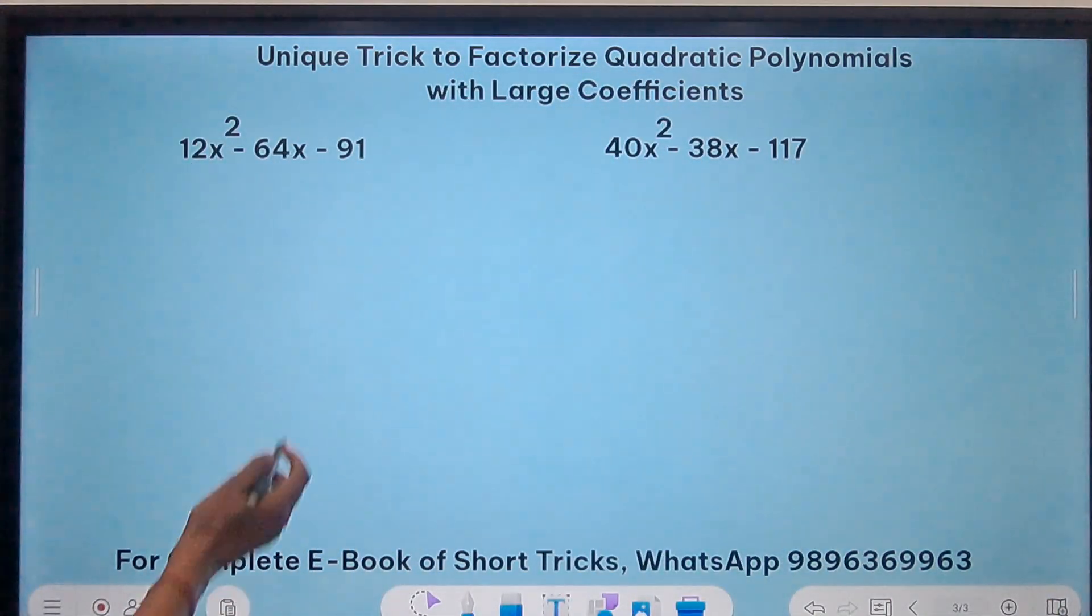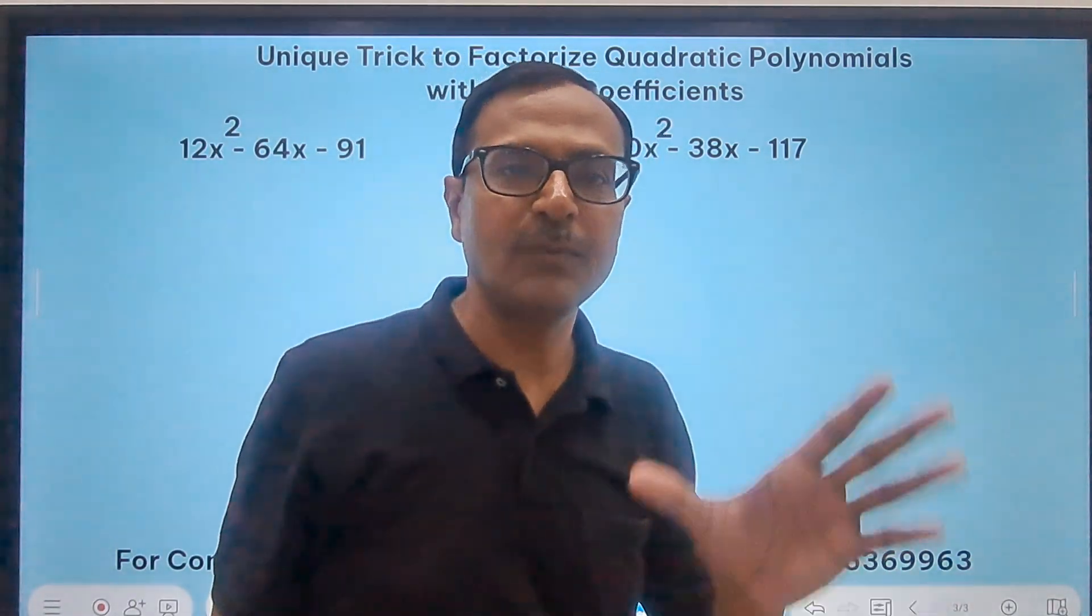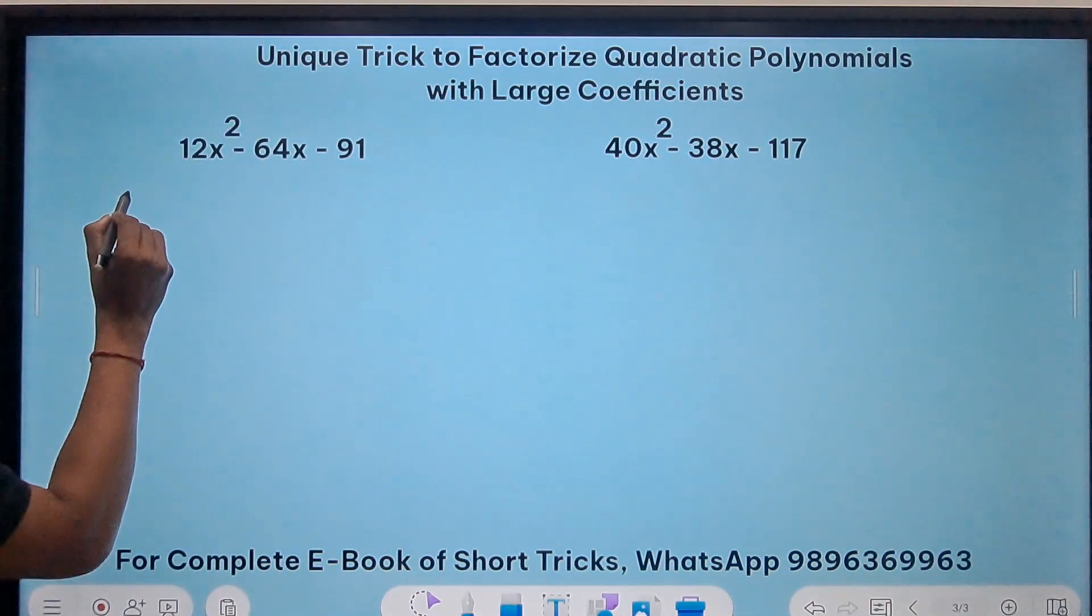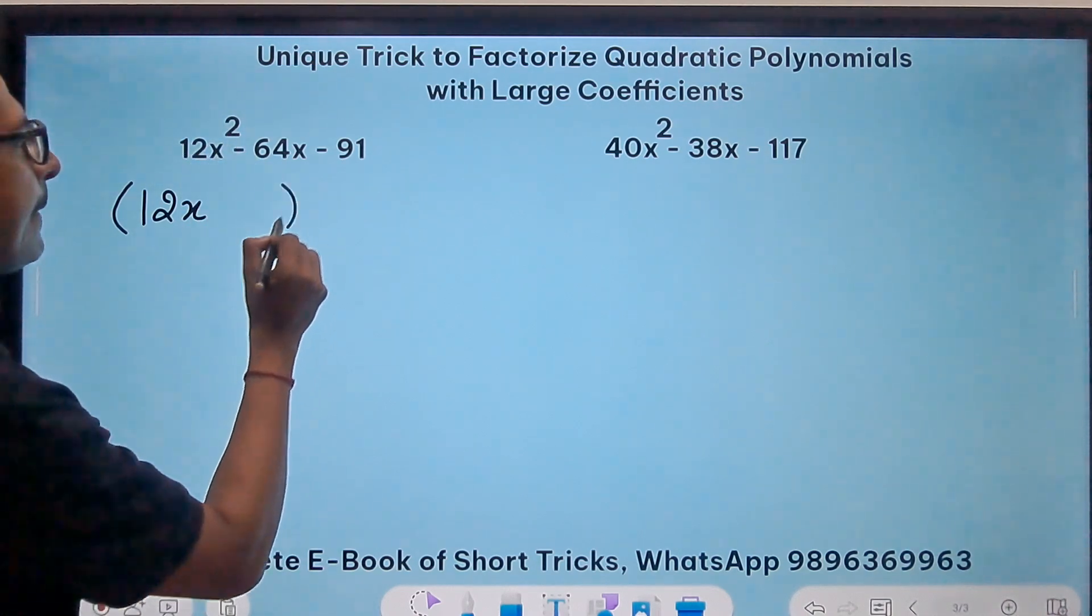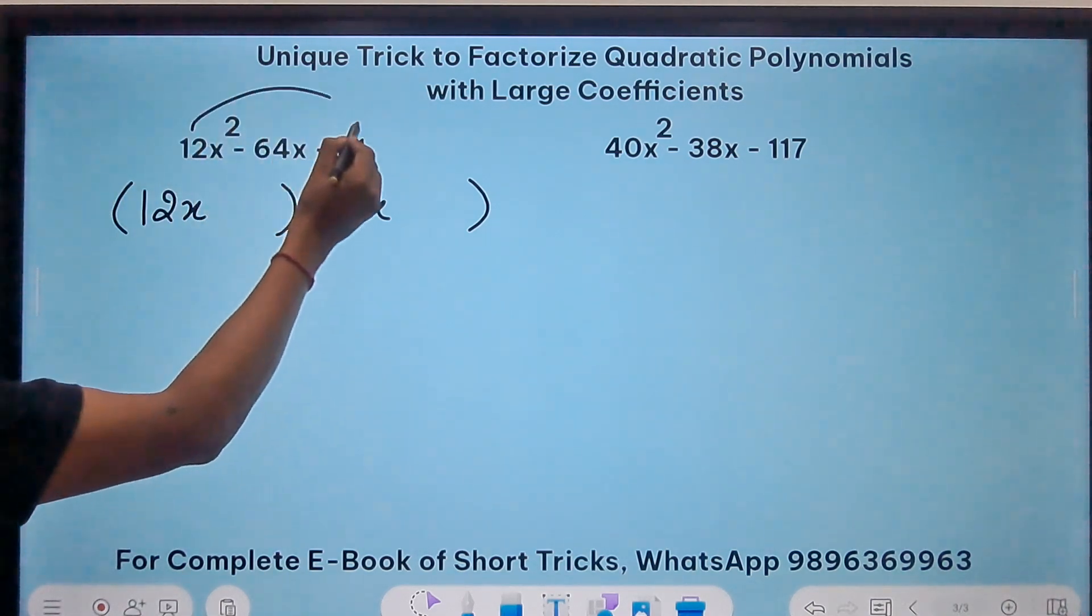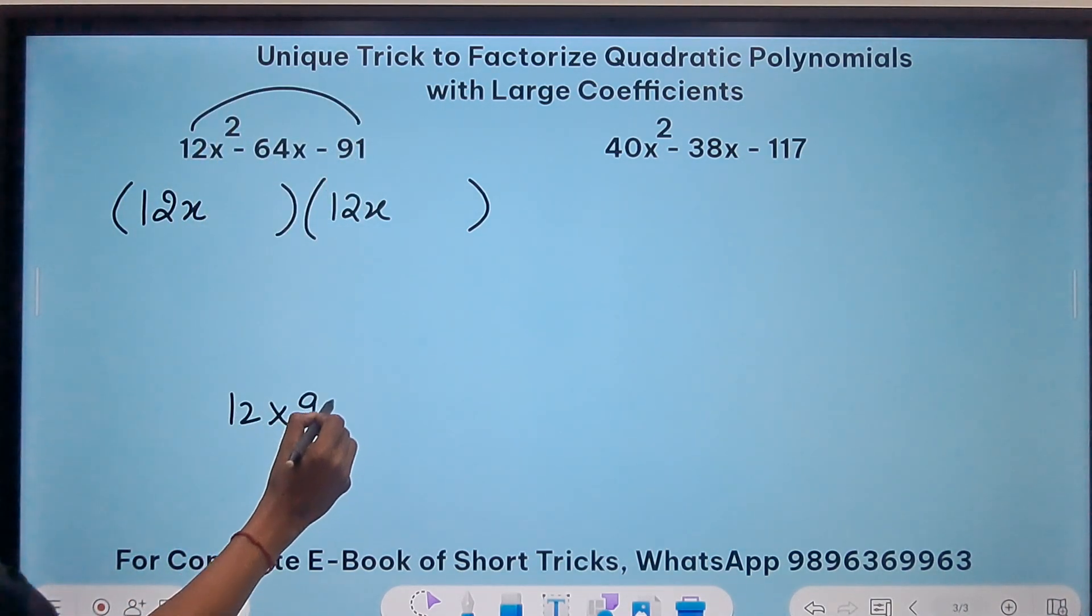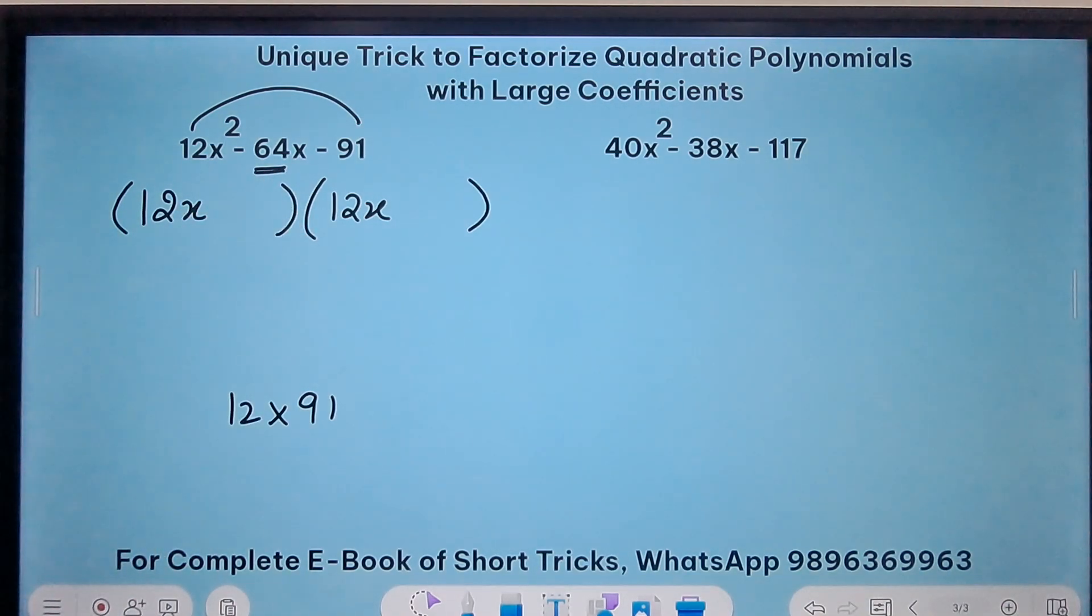I have taken two more problems here you can see. We have a 91 here and a 117 here and still the method works well. Let's check. So I will be a little quicker now. 12x because I have to remove the square, and then 12x in the second bracket also. Now 12 times 91, I don't want to multiply these, I want to get a 64. So I will factorize them further and break down 12 as 2 times 6 and 91 as 13 times 7. 13 times 7 is 91.